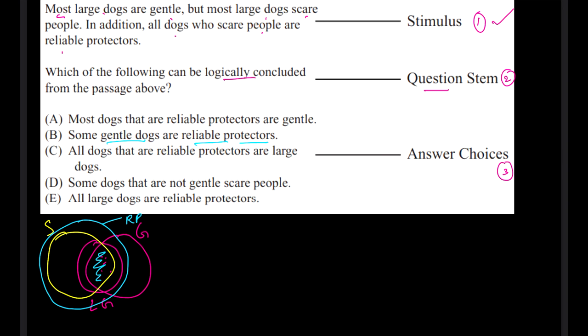So the answer of this question is some gentle dogs are reliable protectors, which is absolutely correct, logically concluded. And these types of questions are better done with the help of option elimination. Well see, most dogs that are reliable protectors are gentle - there is no direct relationship between gentle and reliable protector, so because there is no direct relation we can avoid this option.